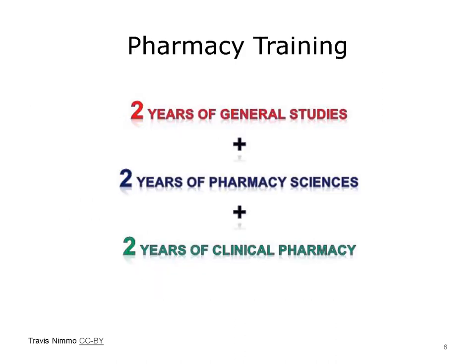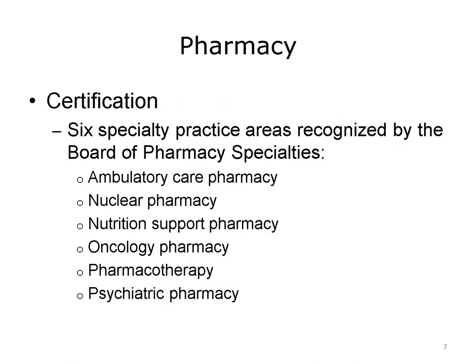Since 2007, a pharmacist must have a Doctor of Pharmacy degree, or PharmD. The training can be thought of as a 2-plus-2-plus-2 type of program: two years of general studies, two years of pharmacy sciences, and two years of clinical pharmacy. Options exist for residency and fellowship programs after completing the PharmD. The Board of Pharmacy Specialties also recognizes voluntary certification in six specialty practice areas: ambulatory care pharmacy, nuclear pharmacy, nutrition support pharmacy, oncology pharmacy, pharmacotherapy, and psychiatric pharmacy.